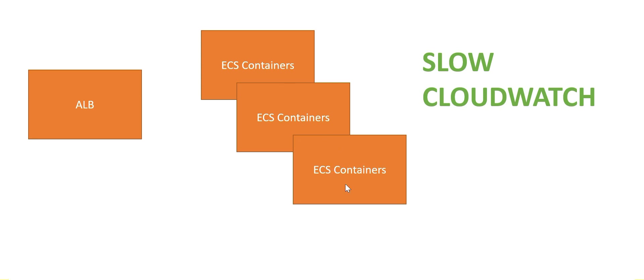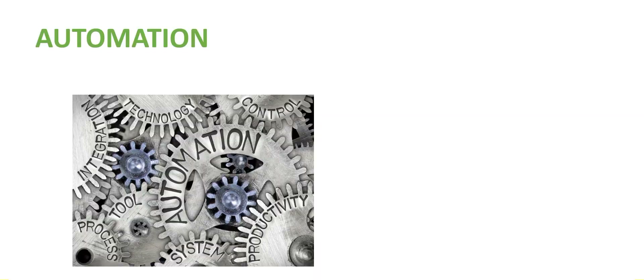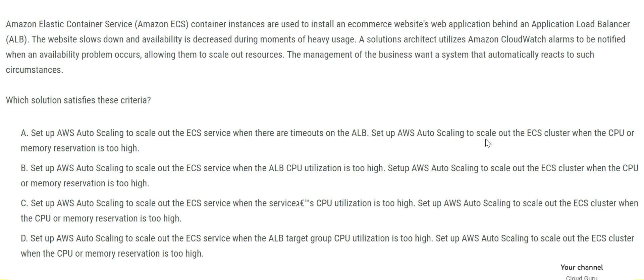Scale up means if there are three containers, it will create six, eight, ten and so on, so that the system does not go slow. The requirement is to bring automation — you see this last line. Looking at the four options, the second piece is the same across all: setup scaling to scale out the ECS cluster when CPU or memory utilization is too high. So we focus only on the first piece.